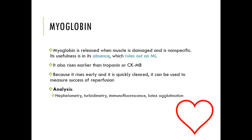Myoglobin is useful — sometimes in its absence — because then it could rule out an acute MI, a myocardial infarction. But if you're suspecting rhabdomyolysis or Duchenne's muscular dystrophy or something like that, then an increased level could correlate to how much damage is going on.